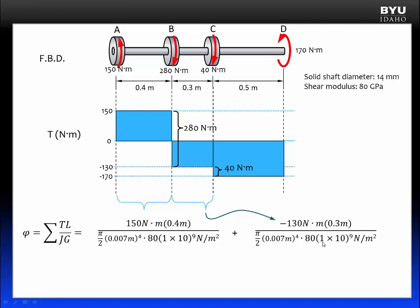And finally, the term from C to D, the internal torque shown on the diagram is a negative 170 newton meters. The length is the length from C to D, 0.5 meters. J and G are the same as before.